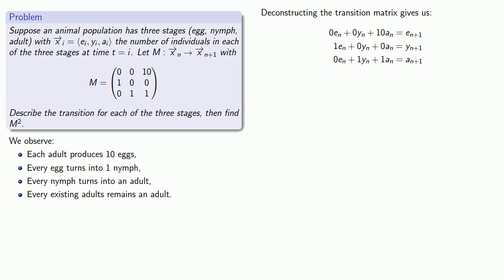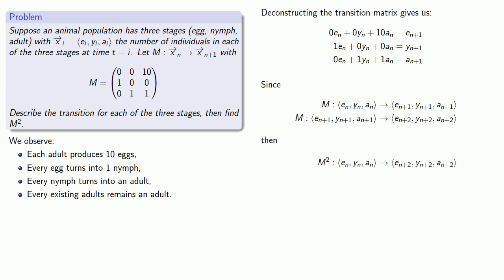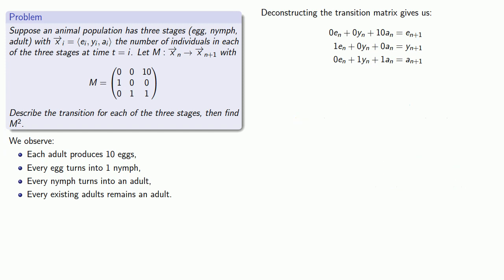Now, how about M squared? M is the transition matrix that describes how we go from the number of eggs, nymphs, and adults at one point in time to the next. If I apply M to the output, I get the values at the point in time after that. M squared, which corresponds to applying the transition M twice, tells me the number of eggs, nymphs, and adults at two time intervals after my starting point, derived from my starting values.